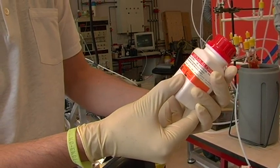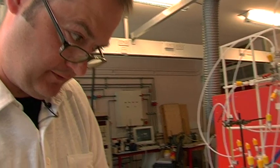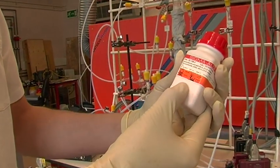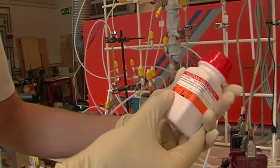Here's the stuff. Quecksilber Oxid - that's German. Mercury Oxide Yellow. It's dangerous for the environment and very toxic.